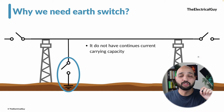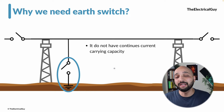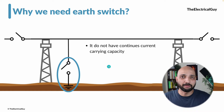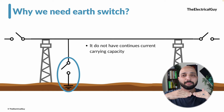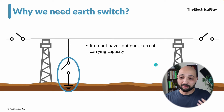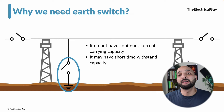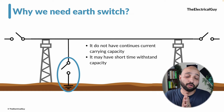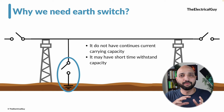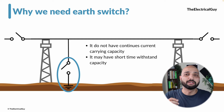There are a few things to know about the earthing switch. First, earthing switches are not closed during normal operating conditions — when the line is live we do not close them. Therefore they do not have any continuous current carrying capacity. If your system current is 2000 amperes, the earth switch is not designed for that. However, the earth switch should have the capability to carry short-time withstand current for a specified duration — such as one second or three seconds — which is essentially the fault current.